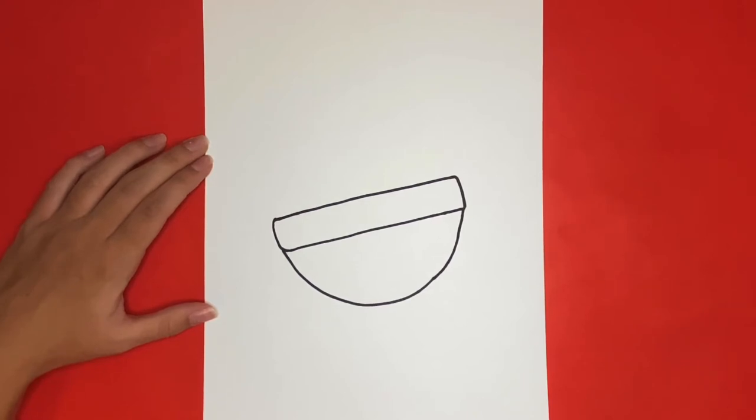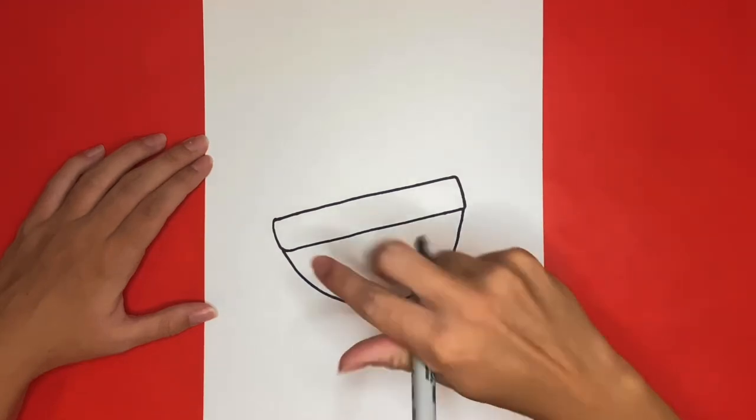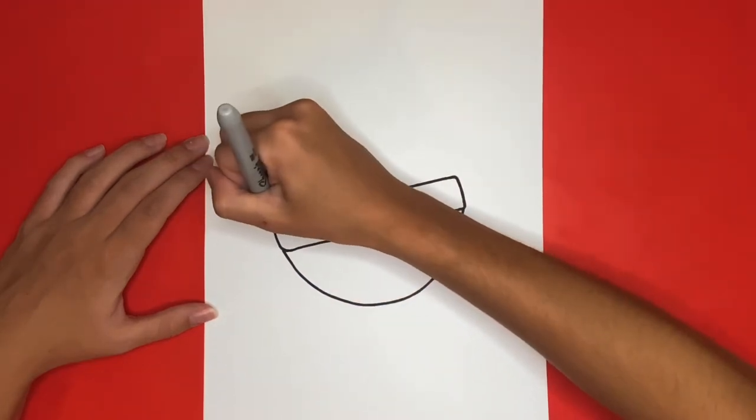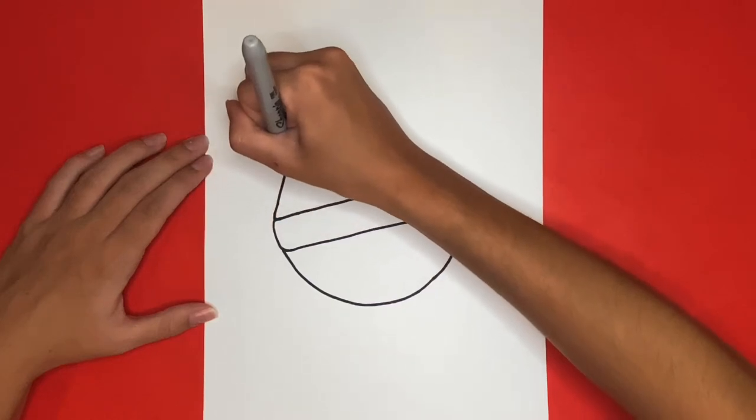Now we are going to draw the top half of our bath bomb. For this we are going to draw another big curved line but this one will be connected on top of that diagonal line in the middle.